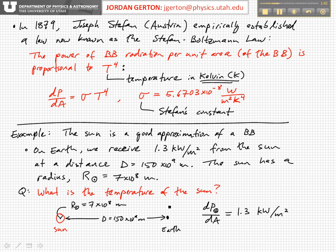So if we drew a big sphere here that is the sphere that's centered on the sun and whose surface passes through the earth, then the total power radiated by the sun would be equal to the power that passes through that sphere.